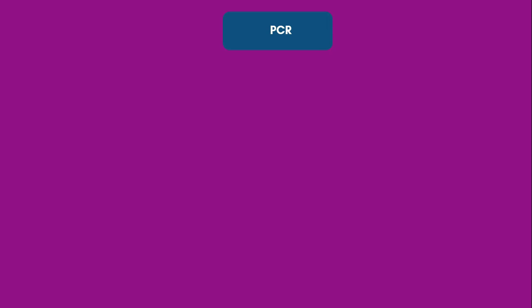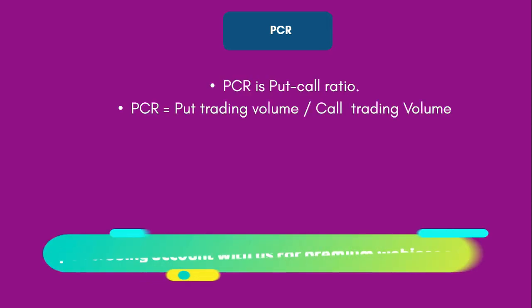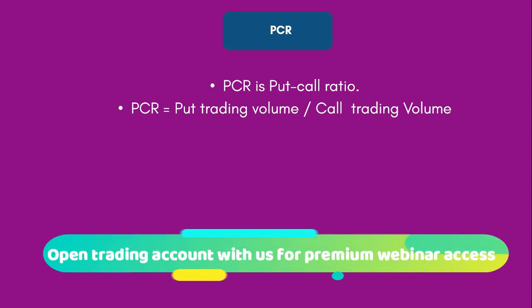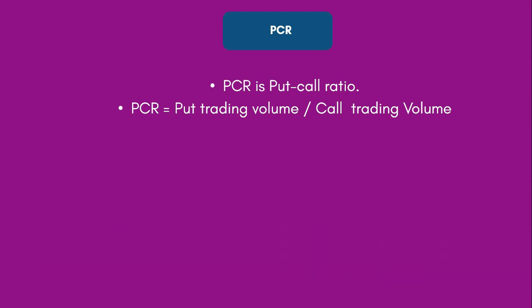PCR, as the name suggests, is basically put call ratio. It is nothing but the volume traded in puts divided by the volume traded in calls. We divide how much volume is done in put for a given day by the call volume for the same day to arrive at a put call ratio. This ratio tells us a lot about in which direction the market is heading. If there are a lot of buyers in puts, put trading volume would be higher than call trading volume and PCR would be above one. Similarly if call trading volume is greater than put trading volume, that means market is trying to go up and PCR value will be less than one.